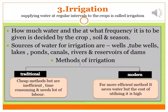Supplying water at regular intervals to crops is called irrigation. How much water and at what frequency the field should be irrigated is a very important task. In today's time, when there are lot of water issues, we have to think carefully about which methods of irrigation to follow. Traditional methods are cheap but inefficient, time consuming, and need a lot of labour, whereas modern methods are far more efficient and save our water — which is today's demand.